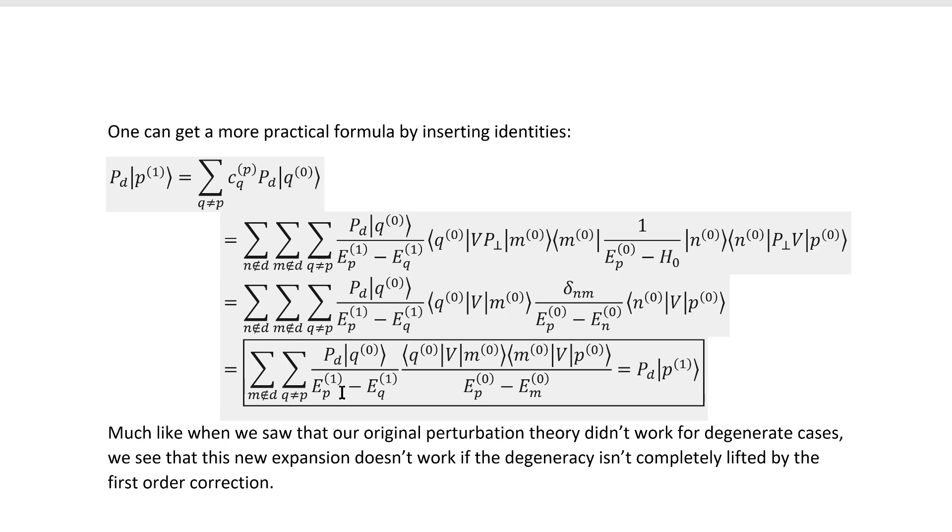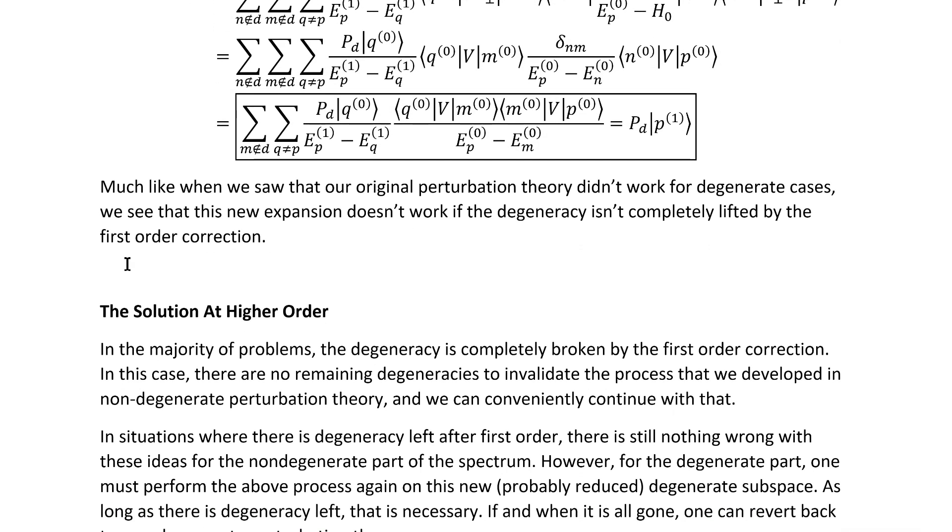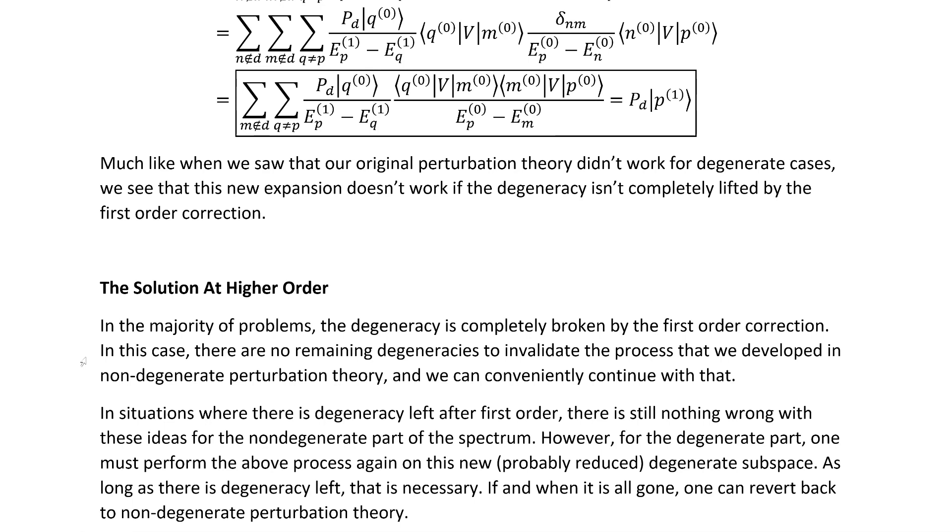There is something to note here. While we don't need to assume no degeneracy in the unperturbed spectrum, we do have this new kind of energy denominator showing up there. So much like when we saw that our original perturbation theory didn't work for degenerate cases, we see that this new expansion doesn't work if the degeneracy isn't completely lifted by the first order correction. Now, this might seem like a bit of a disappointment, but it's not quite as bad as you think. In the majority of problems, the degeneracy is completely lifted by the first order correction. In this case, there is no remaining degeneracies to invalidate the process that we developed in the non-degenerate perturbation theory video, so we can conveniently just continue with that.